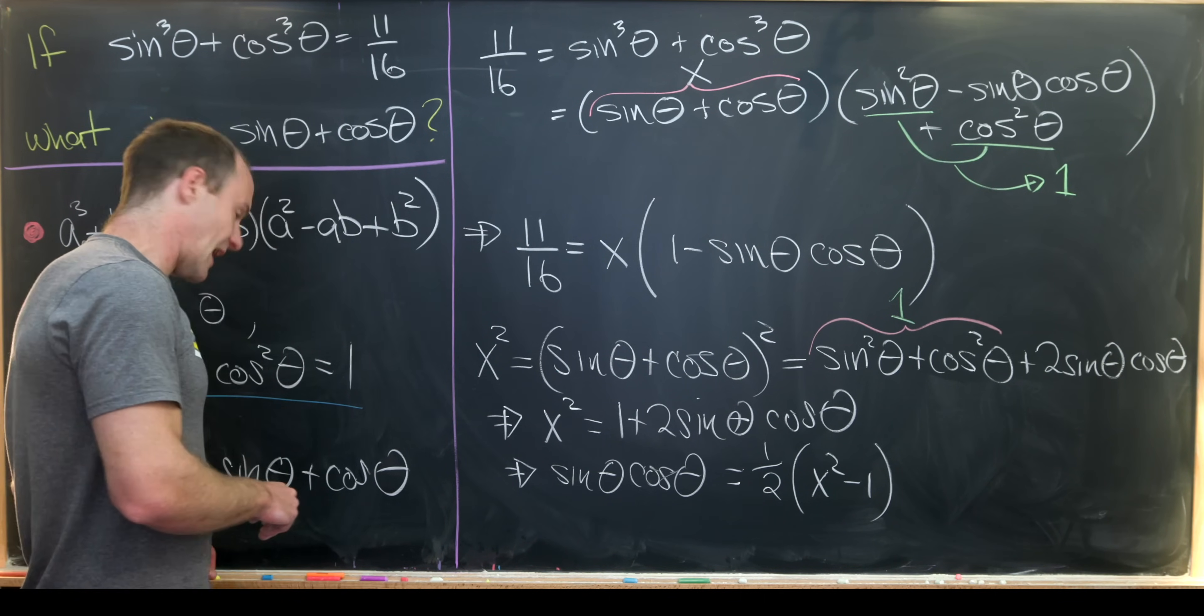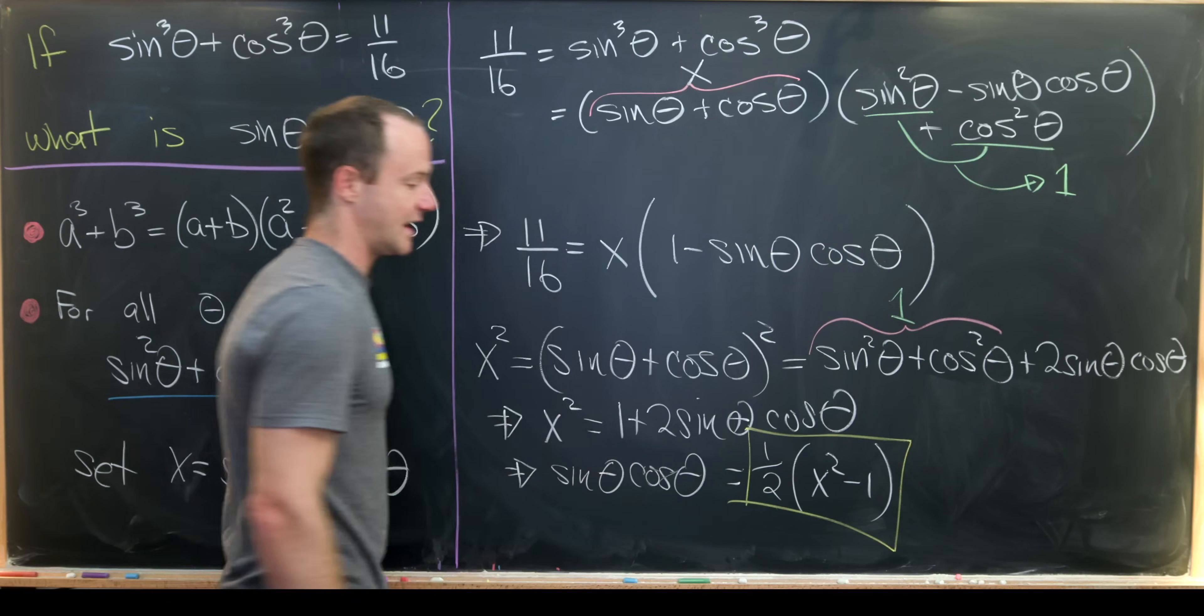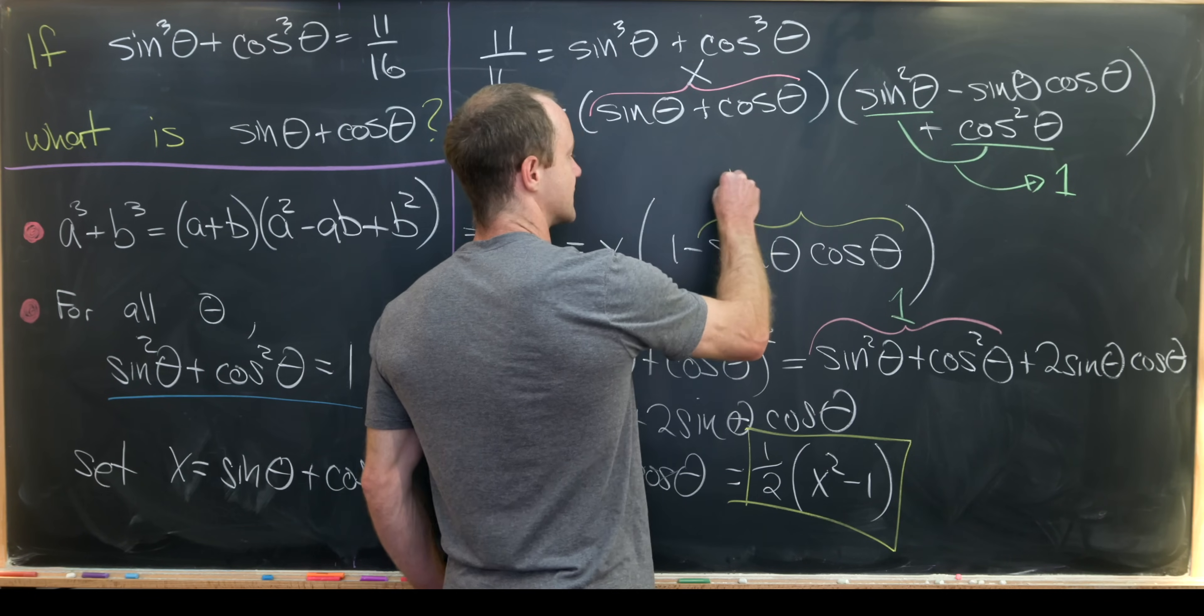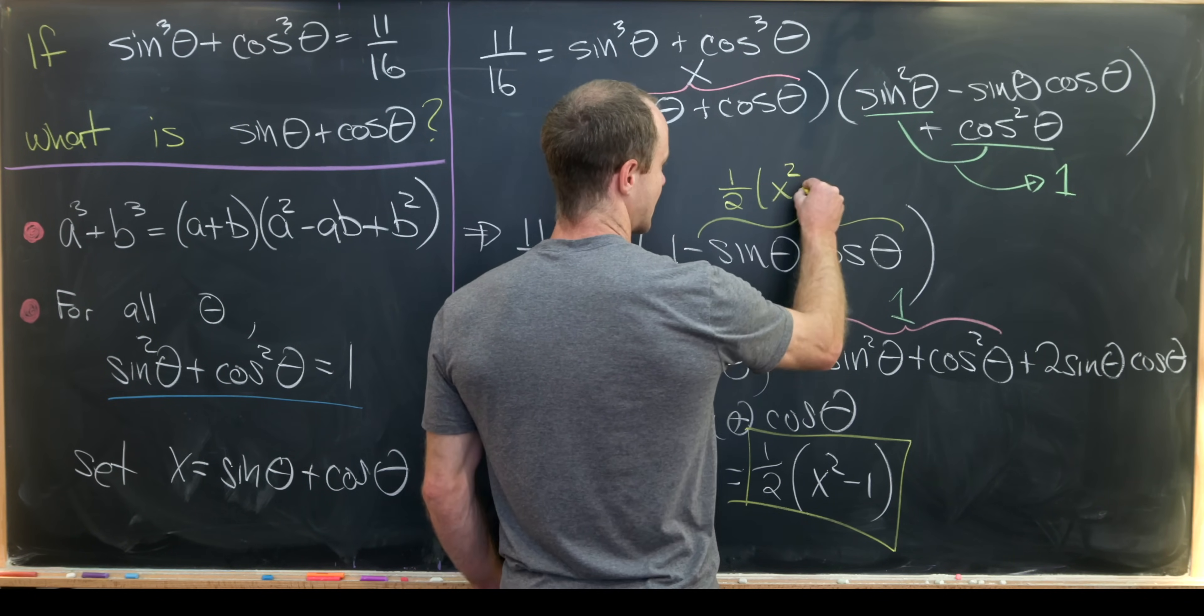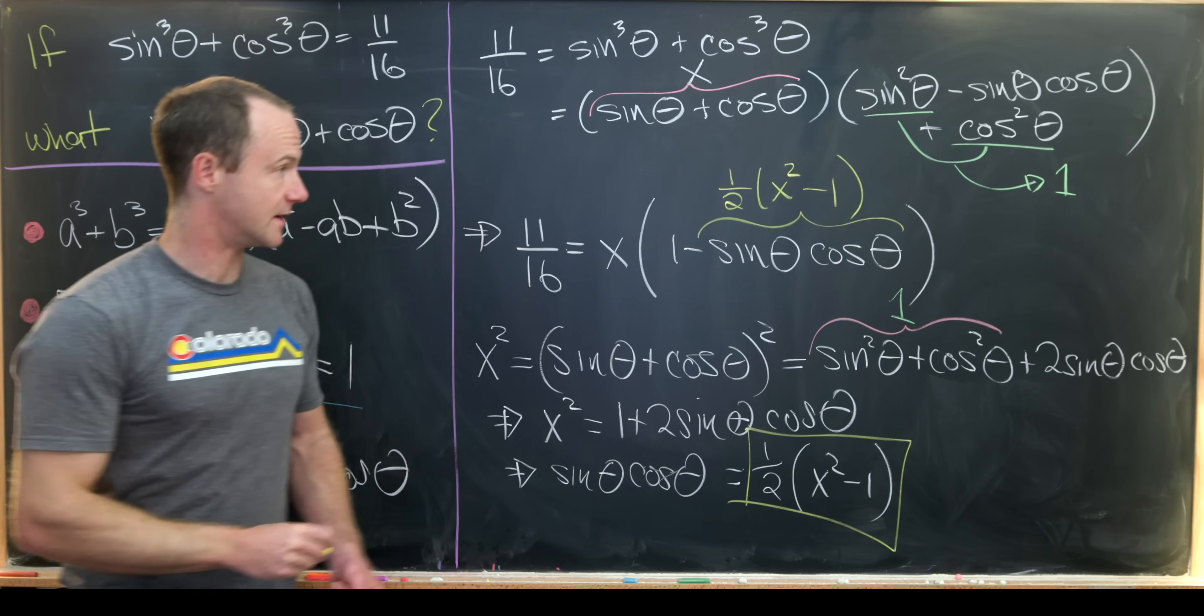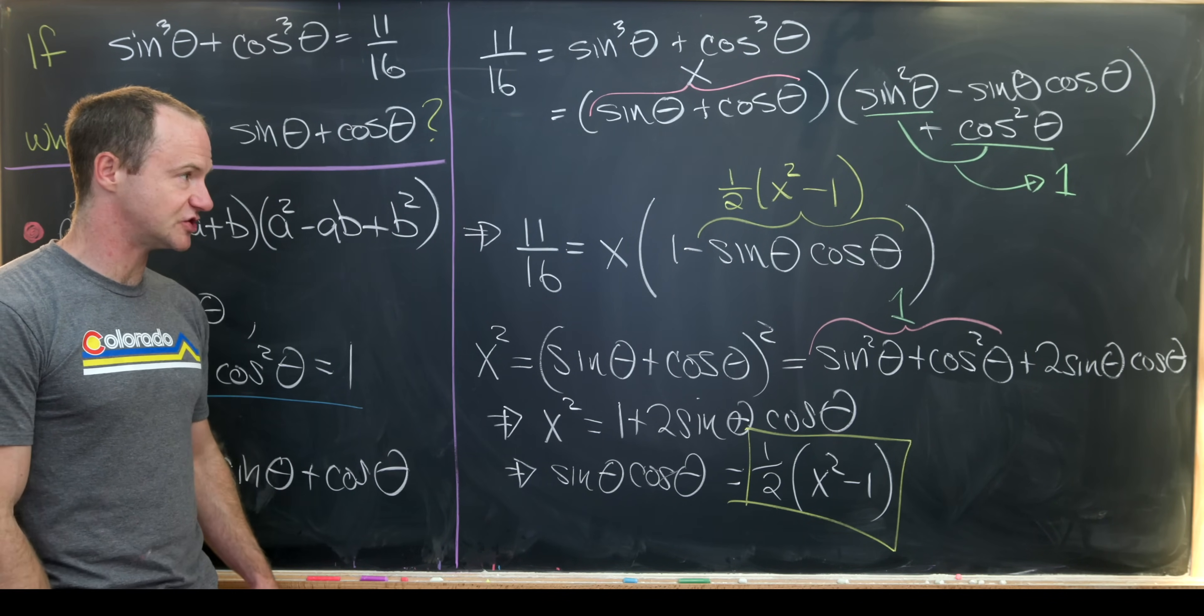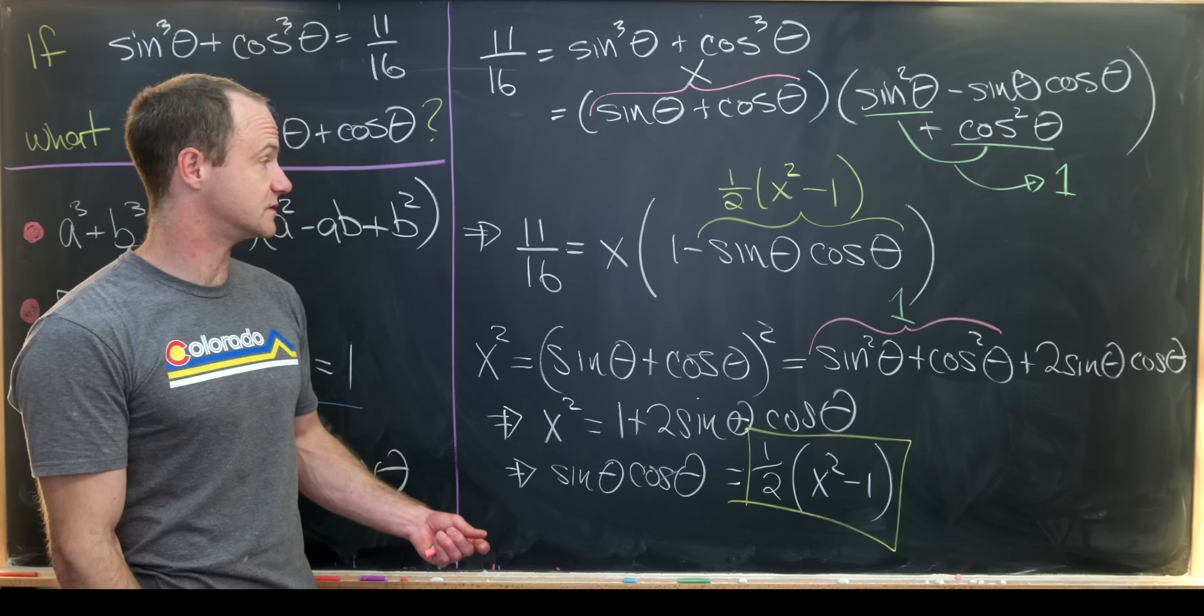So now the obvious thing to do is to take this one half x squared minus one and plug it in right here. So we have this is one half times the quantity x squared minus one. If we look at that carefully, that turns this into a polynomial equation for x. But notice x is exactly what we want to find over here. So that's good news.